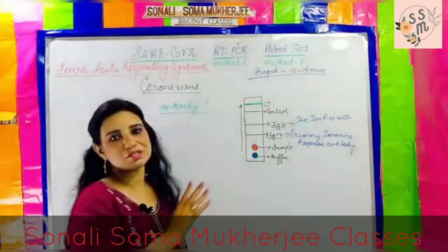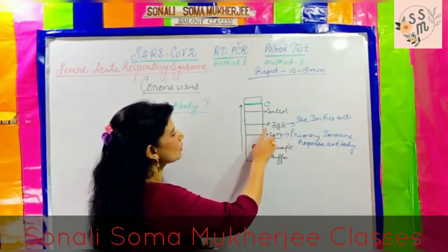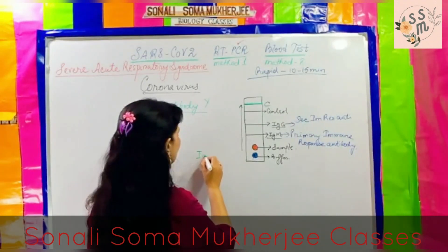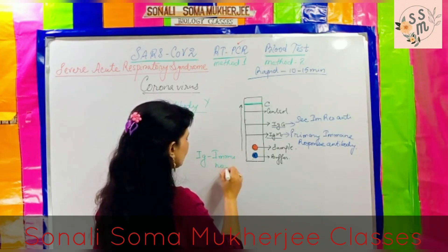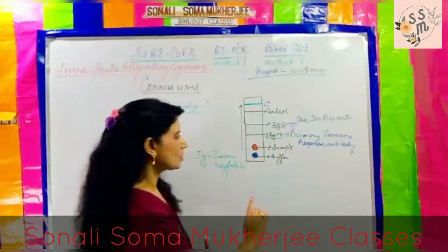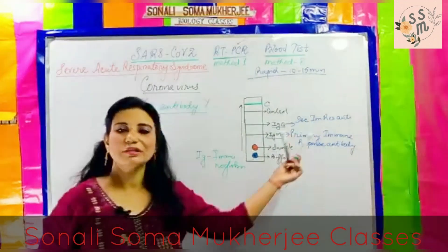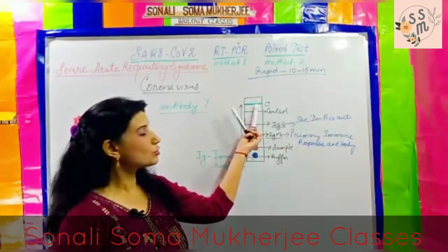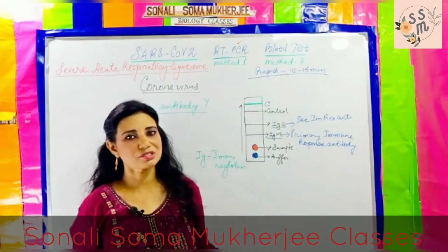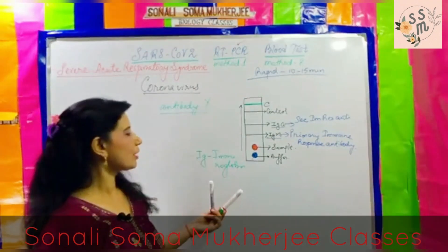If you find a line at the control section, it is proof that the test has run and the kit is working correctly. Now if the test is completed and there is no line in IgM or IgG — IgM stands for immunoglobulin, signifying the primary immune response antibody — but there is a line at the control section, that means the test ran properly, you are not positive, and you do not carry SARS-CoV-2.